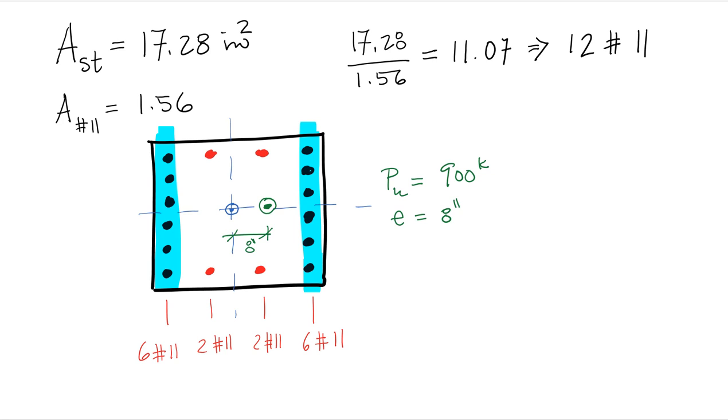If we use number 11 rebar that has an area of 1.56 inches square, that gives us 11.07 rebar. We have to round up. So that comes out to 12 number 11. So we put six number 11 on one face, six number 11 on the opposite face.